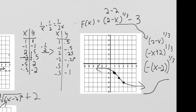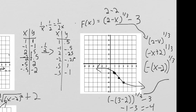We can even plug in a point to make sure we're feeling good about this. The point (3, -4) should work for our function. So if we plug in 3, we should be getting out negative 4. We plug in 3 for x, cube root that, and then subtract 3. 3 minus 2 is 1, and then we take negative 1. So the cube root of negative 1 gives us negative 1, minus 3, which gives us negative 4. So at the input of x equals 3, we get an output of negative 4, exactly what we'd expect.